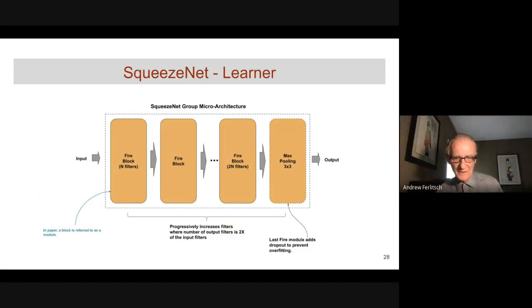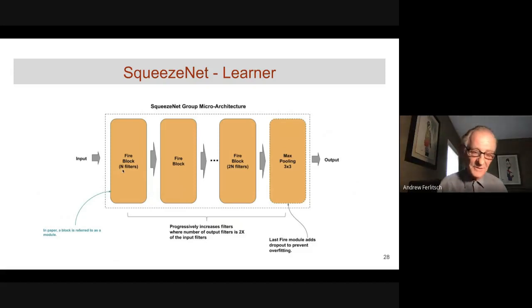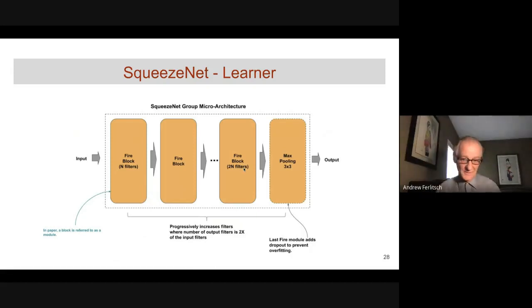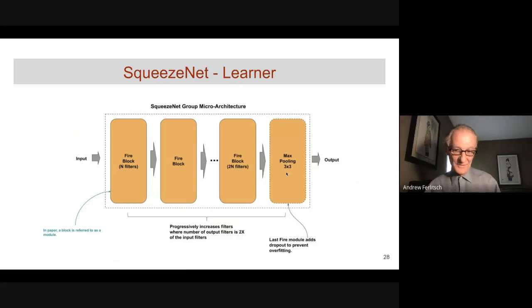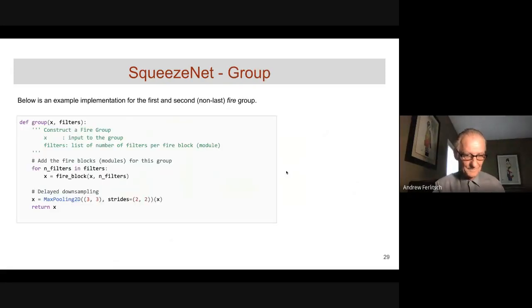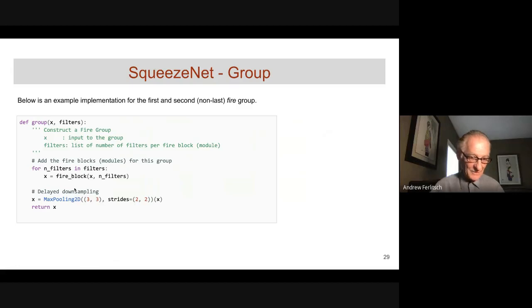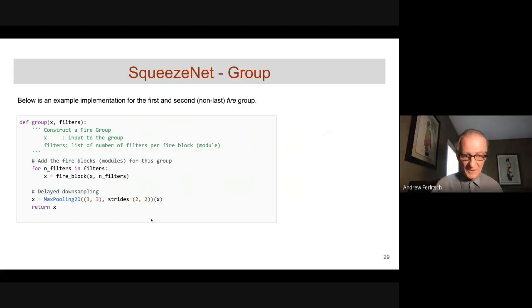A FIRE group consists of a sequence of FIRE blocks. The first blocks in the group use N filters; only the last FIRE block doubles the filters to 2N. At the end of the group, delayed max pooling is applied. In code, the group takes an input tensor and number of filters, creates the specified FIRE blocks, then performs delayed downsampling after all blocks are complete.